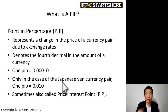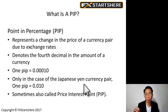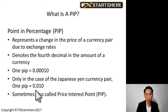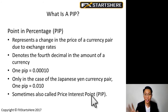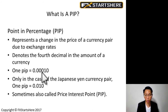Only in the case of Japanese Yen currency pairs, one PIP is denoted by the second decimal, so one PIP equals 0.01. It's sometimes also known as the 'price interest point.' You just need to know: one PIP is 0.0001 for most currency pairs, and 0.01 for Japanese Yen pairs.